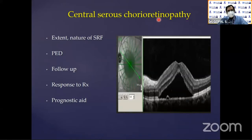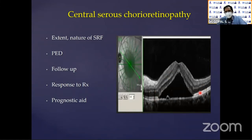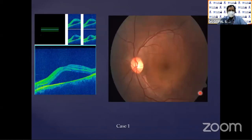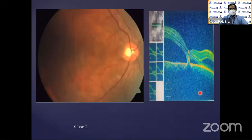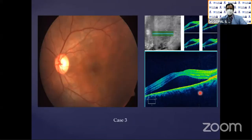In central serous chorioretinopathy, there will be just a fluid there and probably increased choroidal thickness. We do OCT to monitor how it is progressing. These are some central serous retinopathy pictures.